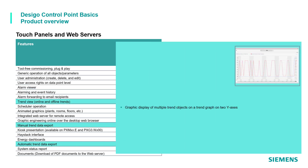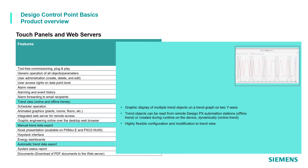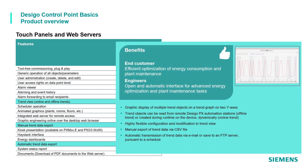Trend view shows data point trends graphically on two axes. The results can be exported into an external file or automatically sent out via email to third parties.